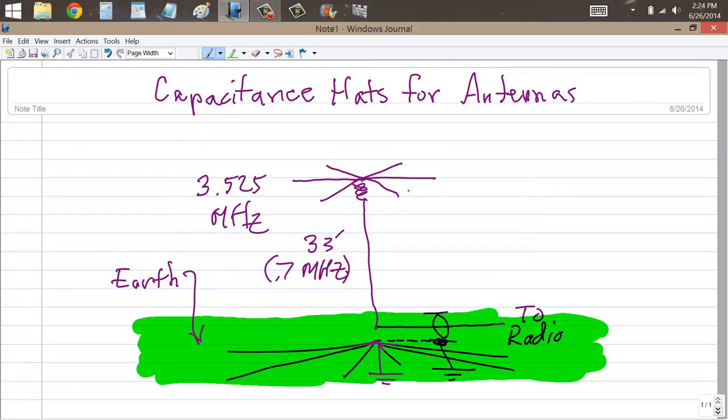You place a loading coil right there and then you construct what they call a capacitance hat. What that basically is, is a bunch of aluminum tubing spokes connected at the outside, maybe six of them or eight of them, connected at the outside together to hold them in place by hose clamps and aluminum grounding wires.